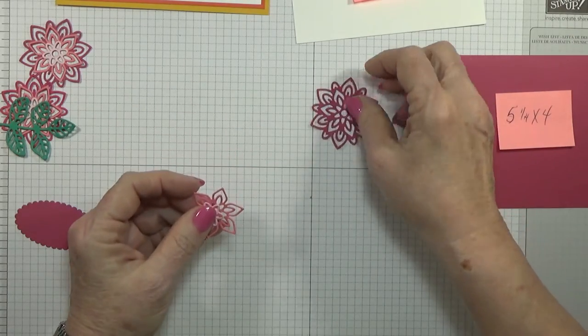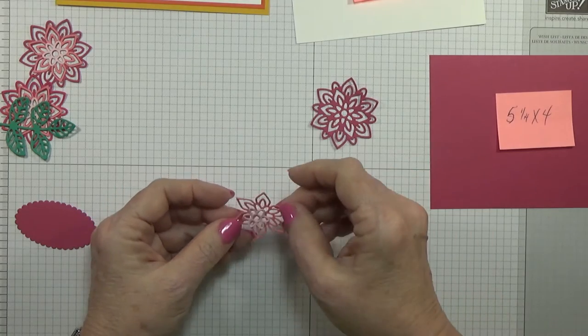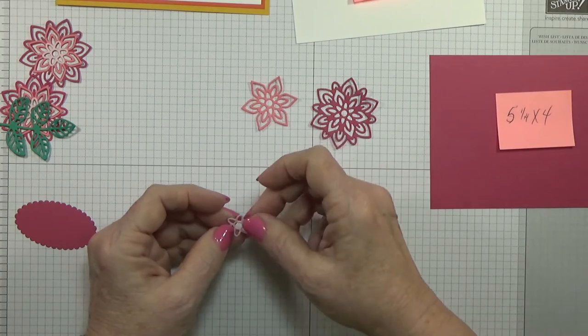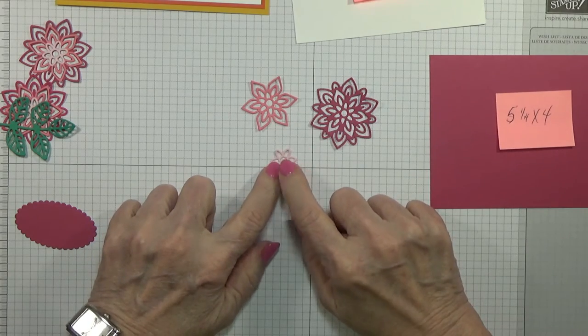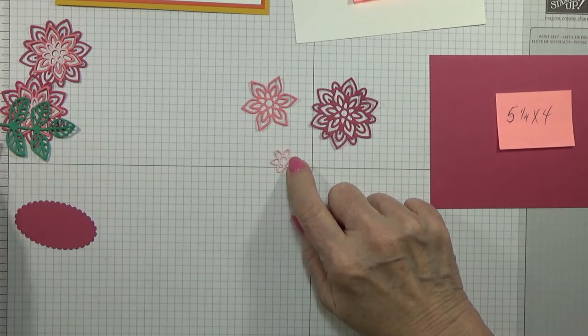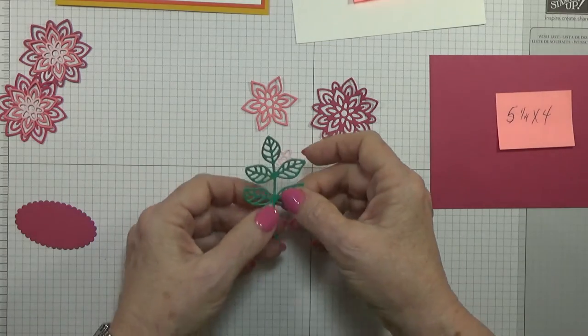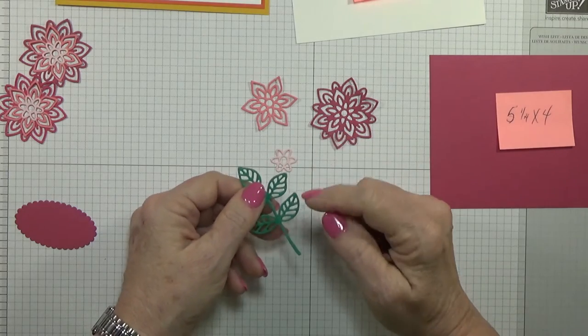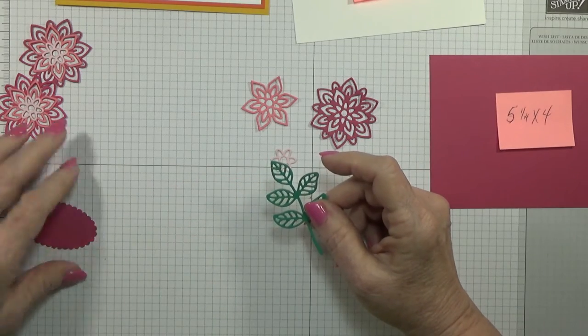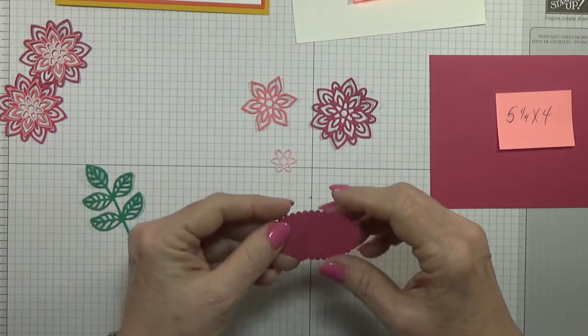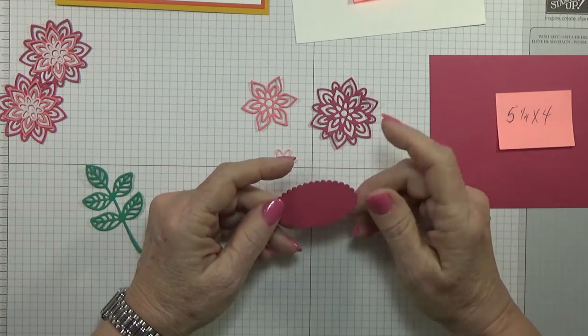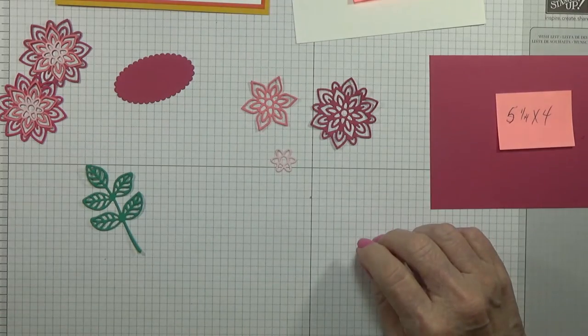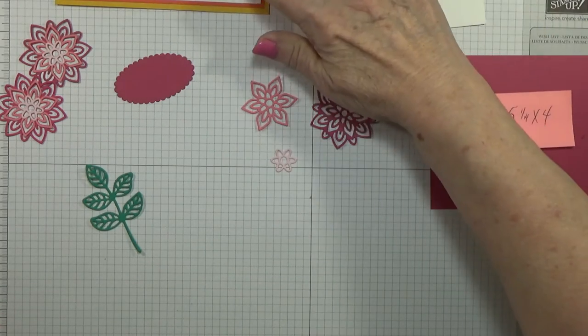Here are the flowers: the bigger one I cut in the Rose Red, this one is cut in the Flirty Flamingo which is one of our new In Colors, and this one is cut in the Pink Pirouette. I also cut the leaves out in the Emerald Envy which is another one of our In Colors.